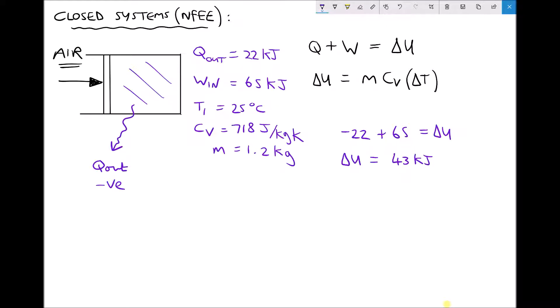As we said before, in order to calculate T2, we have the following formula: T2 equals delta U over MCV plus T1.